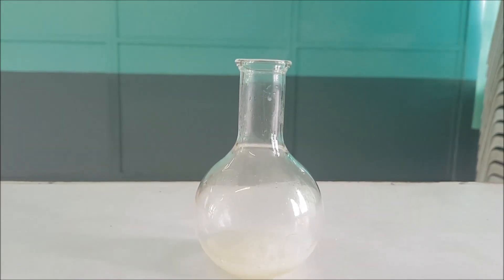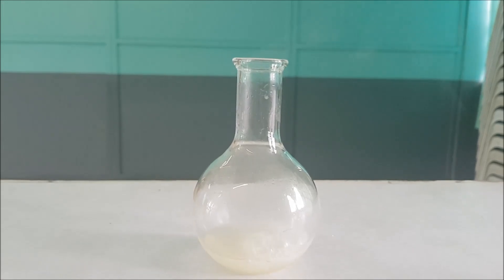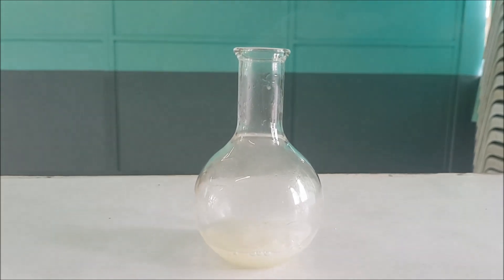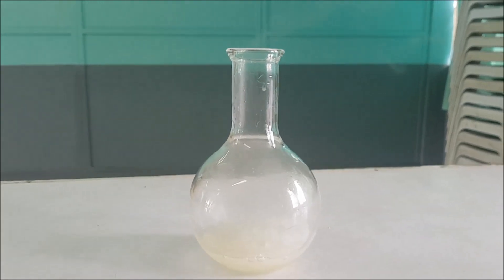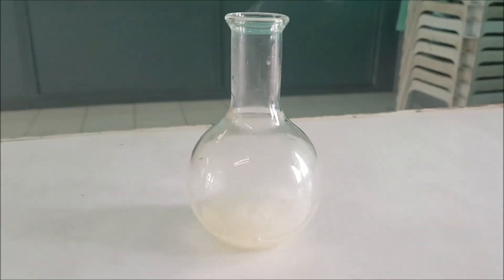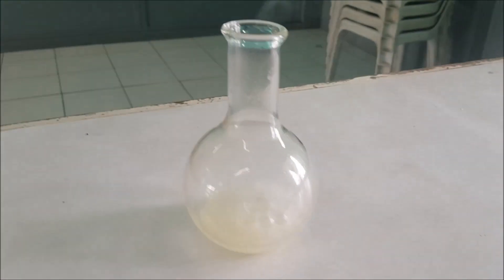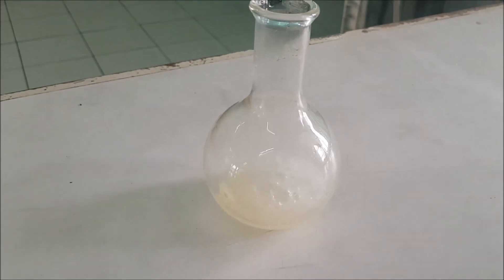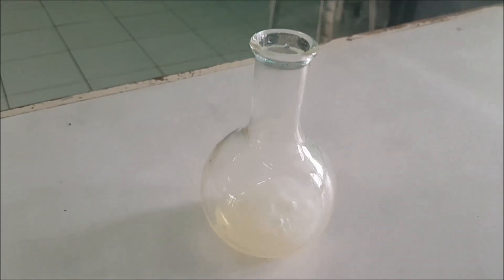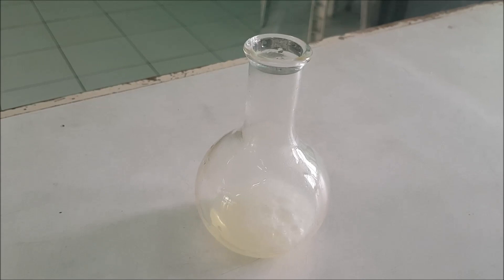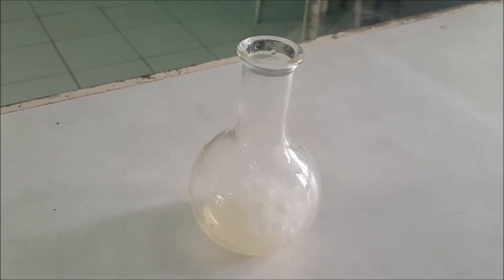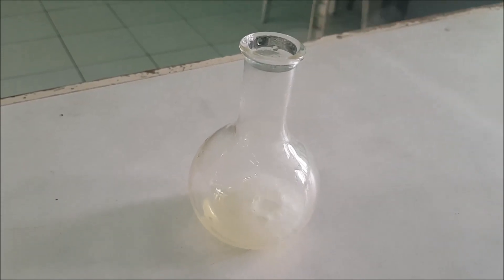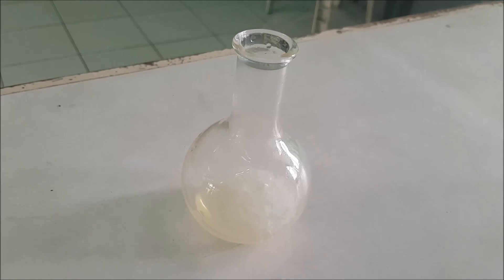Try to observe what is being produced. There is a gas inside, and it's coming out of the Florence flask. That gas is called hydrogen, hydrogen gas. The reaction between the hydrochloric acid and the magnesium produces hydrogen gas.